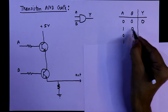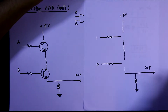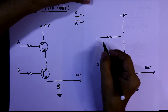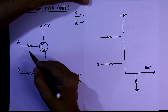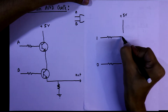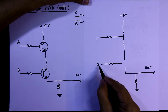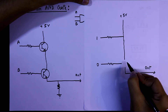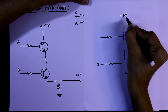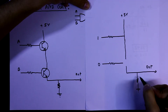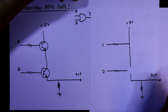For the second condition, input A=1 and B=0. We apply plus 5 volts to the base of transistor 1, so transistor 1 works as a closed circuit. We apply 0 volts to transistor 2, so transistor 2 works as an open circuit. The output is still disconnected from plus 5 volts, and through the pull-down resistor we get 0 in the output. So 1, 0 gives output 0.